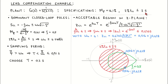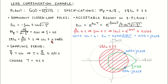From the transient specifications, we calculate the location of the dominant closed loop poles in the s-plane. The dominant closed loop poles can be written in terms of the damping zeta and natural frequency omega as shown here. From the overshoot specification, the damping is calculated as 0.5, and from the settling time specification, the natural frequency is calculated as greater than or equal to 4 radians per second.